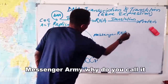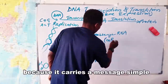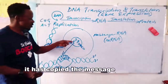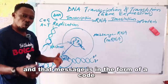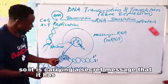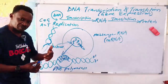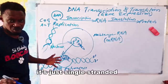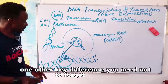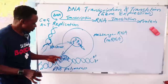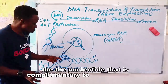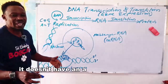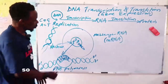Messenger RNA — why do we call it messenger RNA? Because it carries a message. It is just like a postman or a courier. It has copied the message from the DNA and that message is in the form of a code. Normally, messenger RNA is a single-stranded molecule — not double-stranded like DNA. One key difference: on messenger RNA, the nucleotide complementary to A on the DNA is U, because RNA doesn't have thymine among its four nucleotides.